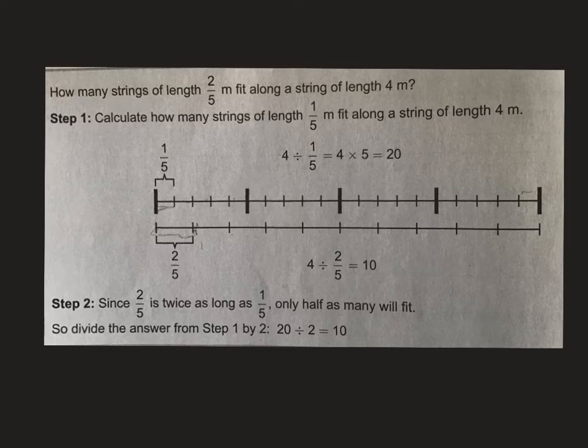We're going to go through a breakdown that they give you in your book of how many strings of length 2 fifths of a meter fit along a string of length 4 meters. Notice we don't have a numerator of 1, so we're going to have to switch the way that we're approaching this. The first step they give us is to calculate how many strings of length 1 fifth of a meter fit along a string of length 4 meters. So this is the top line we have here. We're breaking it down into fifths.